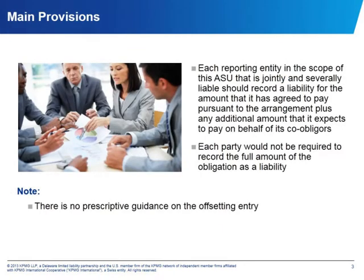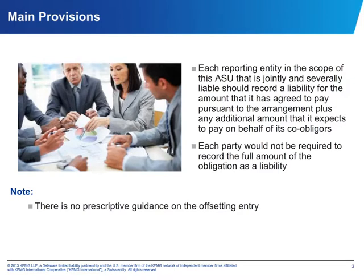Let's talk now about what the update says in terms of the accounting for these obligations. Under the ASU, each reporting entity within scope would record a liability for the amount that it has agreed to pay pursuant to the arrangement plus an additional amount that it expects to pay on behalf of its co-obligors. From a practical standpoint, it's important to understand the concept of 'expects to pay.' This is not a recognition threshold, and it was not intended to be. For obligations within the scope of this ASU, the obligation itself is inherent, and the accounting, after determining you're in scope, comes into play from a measurement perspective. The amount agreed to be paid should agree directly into the arrangement itself.